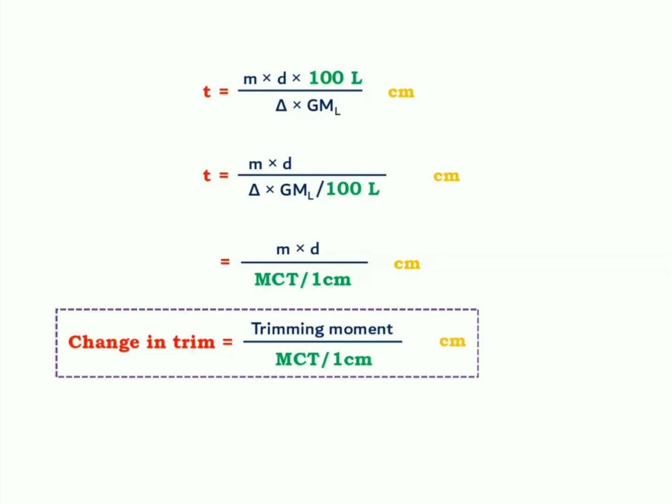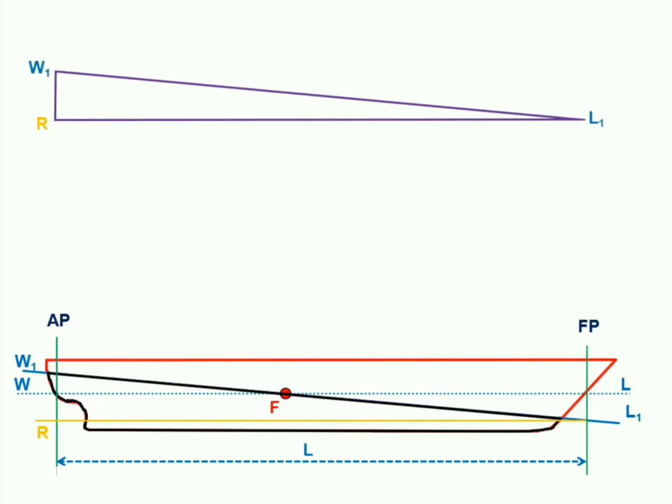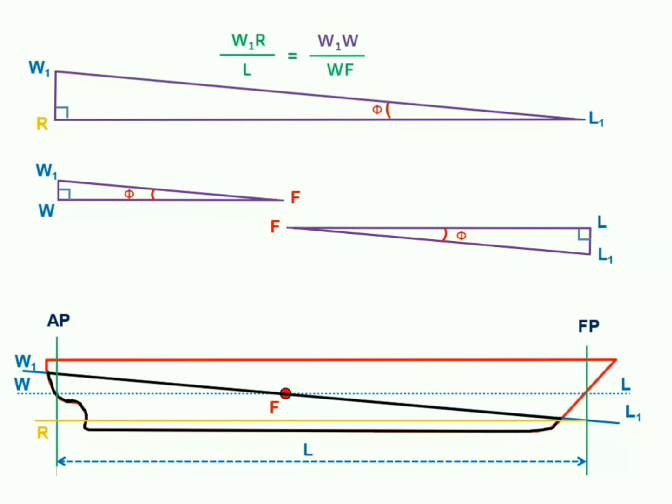Looking at several triangles now. Triangle W1RL1, triangle W1WF, and triangle L1LF. All these three triangles have at least two angles, two corresponding angles equal to one another. Hence, these three triangles are similar to each other. Means, their corresponding dimensions will be in a specific proportion. What we can say, the ratio of W1R to length of the ship will be equals to W1W divided by WF. We are actually correlating these two triangles, the bigger triangle and the smaller triangle here.